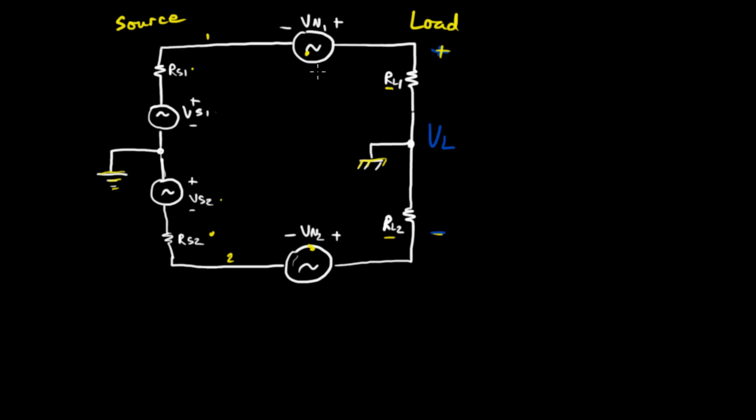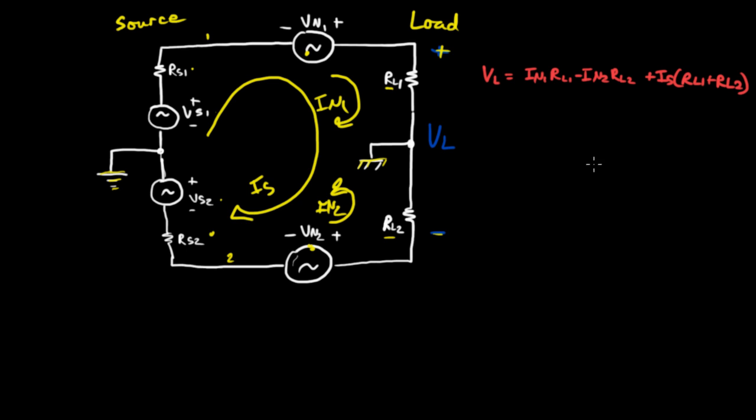Well, VN noise source 1 and VN noise source 2 will create noise currents IN1 and IN2, noise current 1 and noise current 2 through RL1 and RL2. That's just by V equals IR. There's also a net source current which contributes to the system and that's going to circulate like so, IS. Now let's write out the load voltage equation. VL equals IN1 times RL1 minus IN2 times RL2 plus IS times RL1 plus RL2. You can pause and convince yourself that that's the case.